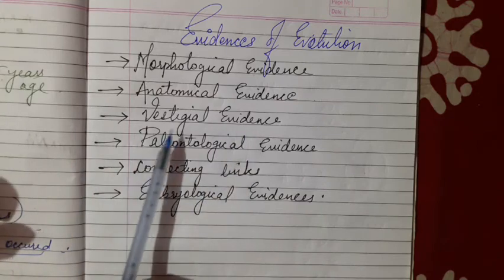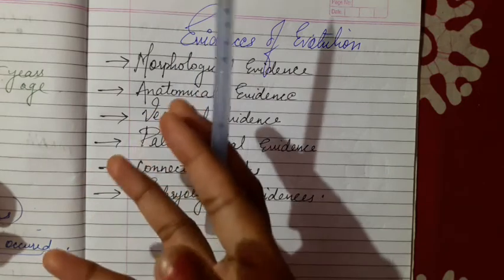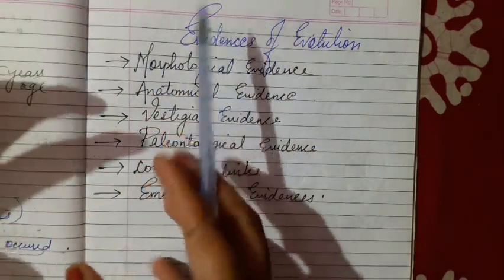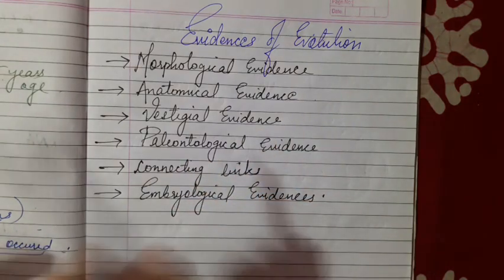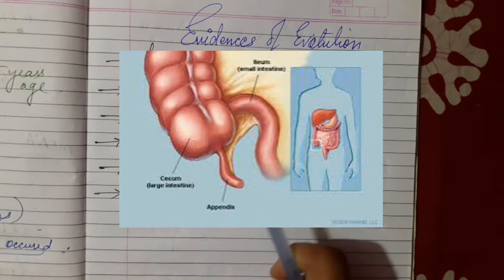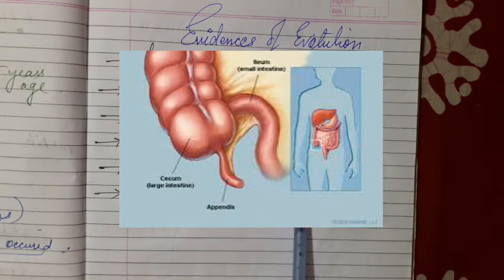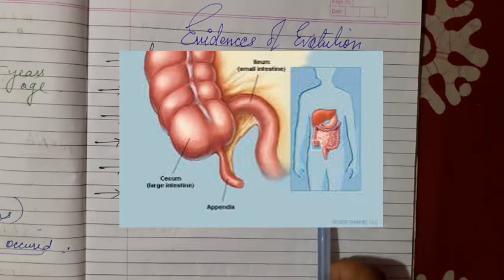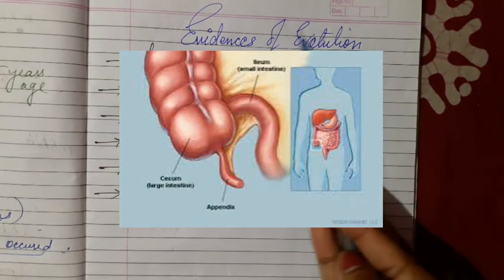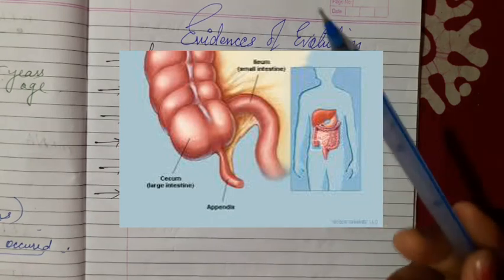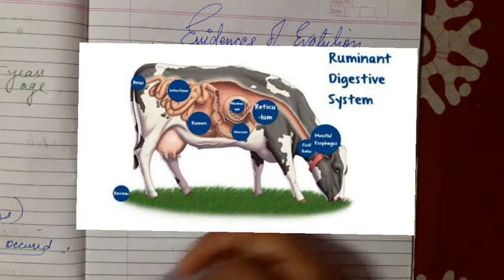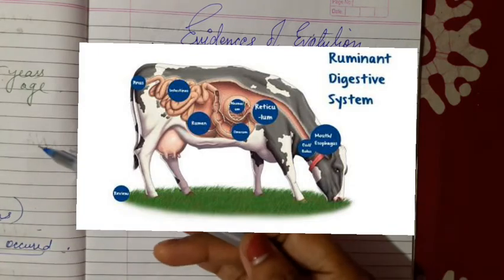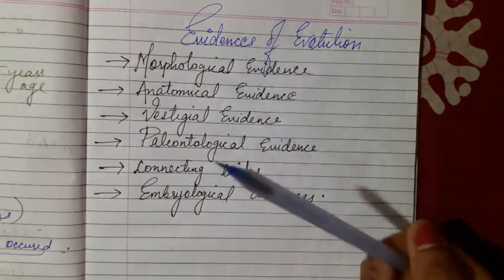The third is vestigial evidence — vestigial refers to useless, undeveloped, or degraded organs. For example, the appendix in human beings: it is still not fully understood what its use is. The appendix is located at the end tip where the small and large intestine meet. While it is useless in humans, this same appendix is useful in ruminants — animals with four stomach chambers, like cows and camels, which can ferment and reuse food.